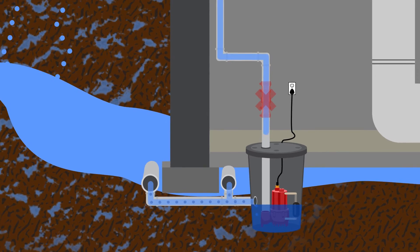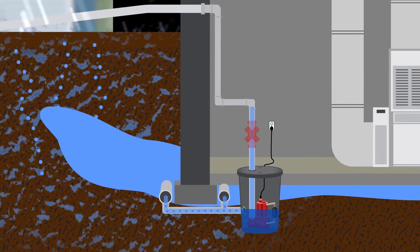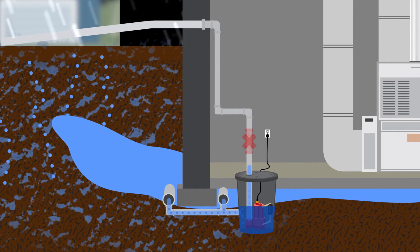Without a check valve, gravity pulls the water back into the reservoir causing the pump to cycle on again.